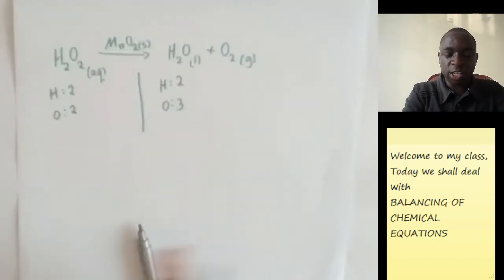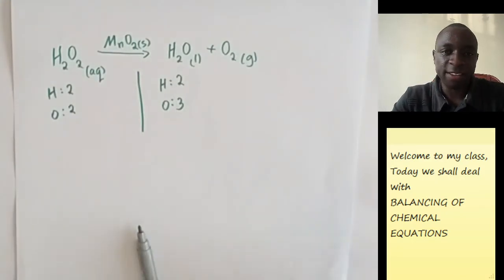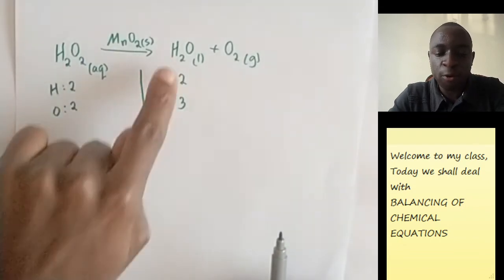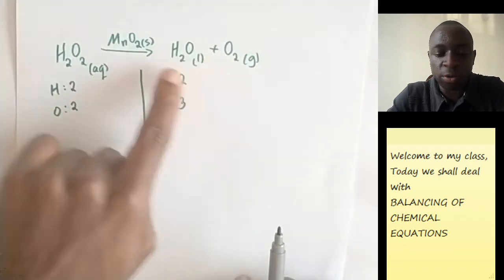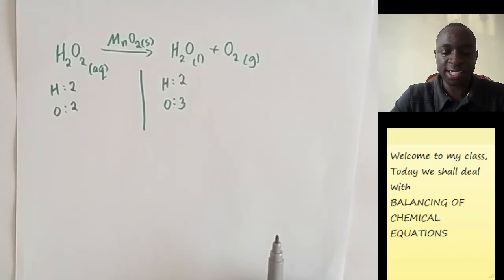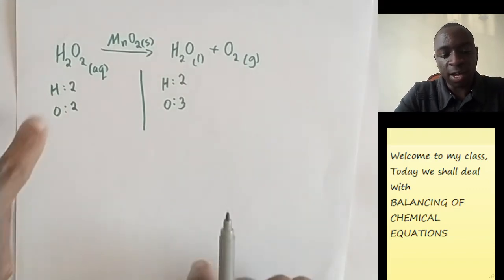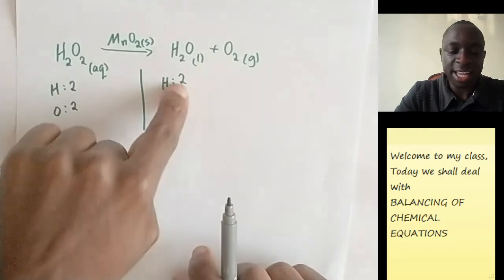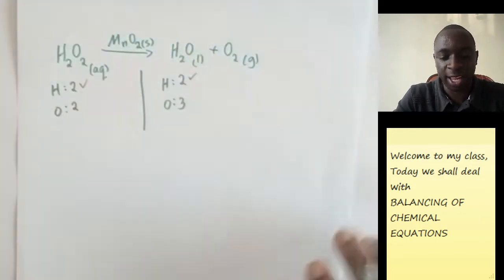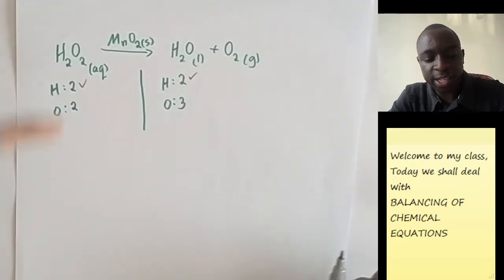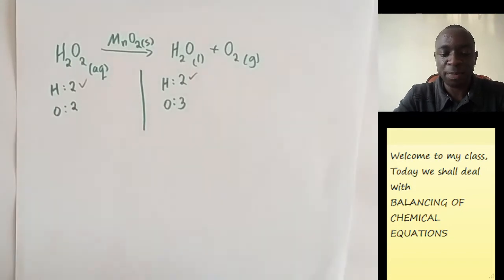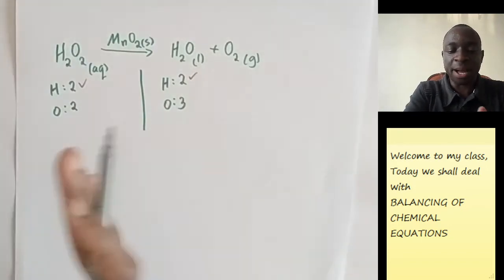So now we need to balance the equation. Remember like we did in the first time, we said we need to add numbers before any of these compounds and we balance it. It could be one or more. So let's see how it goes. Now since we have two hydrogen and two hydrogen, that means for now, the hydrogens are happy. They are okay. Now when you look at the oxygen, we have only two oxygen on this side and three on this side. That means that we need to make sure they are balancing.